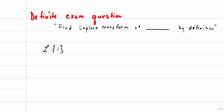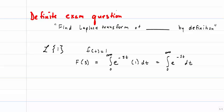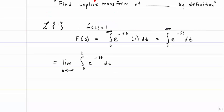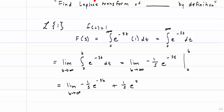Let's do an example: the Laplace Transform of the number 1. Our f of t is just equal to 1. So F of s is equal to the integration from 0 to infinity of e to the negative st times 1 dt. I'll rewrite this as the limit as b approaches infinity of the integration from 0 to b of e to the negative st dt. This is equal to the limit as b approaches infinity of negative 1 over s times e to the negative st evaluated at b and 0, which gives us 1 over s. So the Laplace Transform of 1 is simply 1 over s.